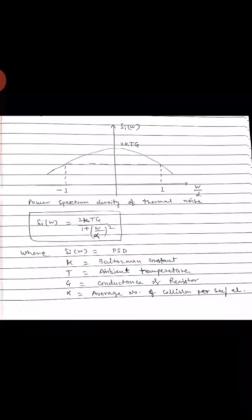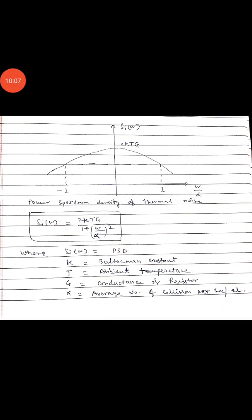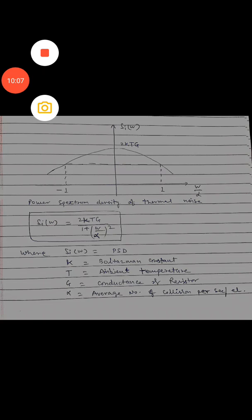This concludes the overall description and classification of various types of noise. Most noise can be considered as white Gaussian noise, because its behavior is similar to white Gaussian noise, which will be discussed in the next topic. These are the important noise classifications in analog communication.